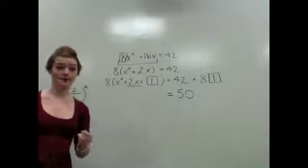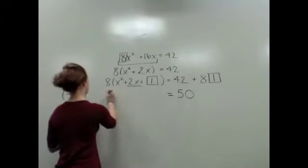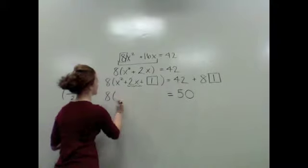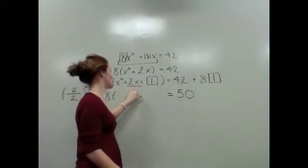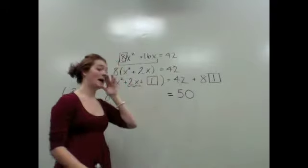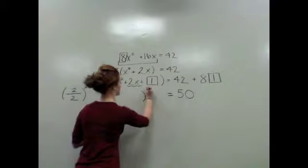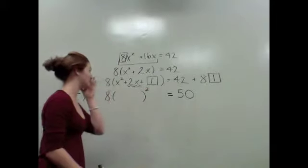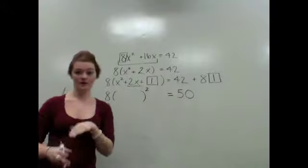The whole purpose, the whole reason I wanted to complete the square, was because I wanted to create a perfect square trinomial. Well, x² + 2x + 1 actually creates a perfect square trinomial. What that means is it creates a perfect square factor. What multiplies to be 1 and adds to be 2, that's 1 and 1.